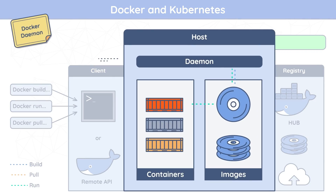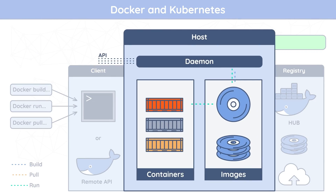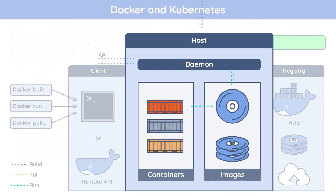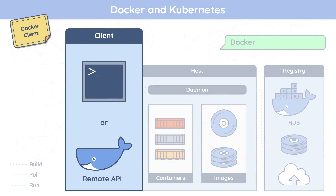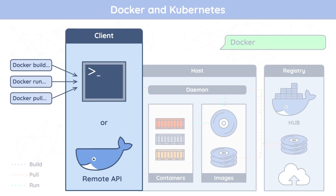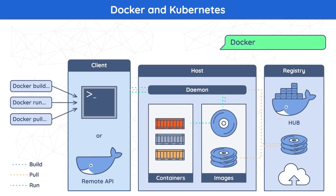The Docker daemon listens for Docker API requests and manages Docker objects such as images, containers, networks, and volumes. It can also communicate with other daemons to manage Docker services. The Docker client is the primary gateway for users to interact with Docker. When users issue commands, the client relays them to the daemon, which then carries them out using the Docker API. The Docker client can communicate with more than one daemon.